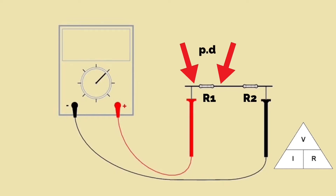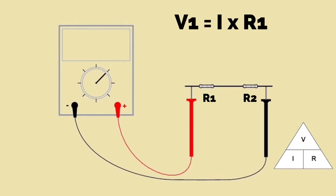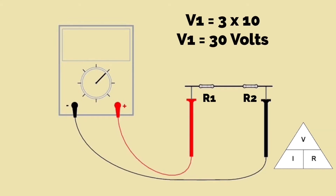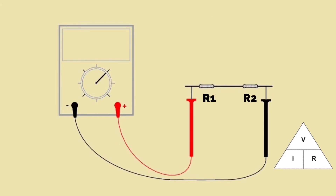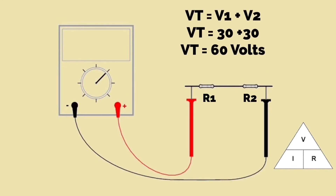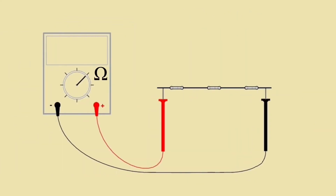We can work out the potential difference, or voltage, that appears across each resistor. As both resistors are valued the same at 10 ohms, we only need to calculate one. Using Ohm's law, V equals I times R: the circuit current is 3 amps and resistor 1 is 10 ohms, so voltage across resistor 1 is 3 times 10, giving 30 volts. Resistor 2 is the same value, so 30 volts appears across it too, giving a total of 60 volts — equal to the supply voltage.